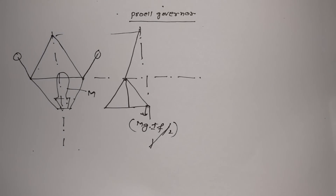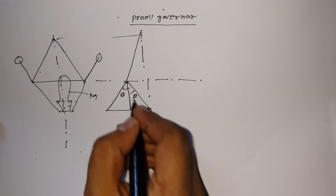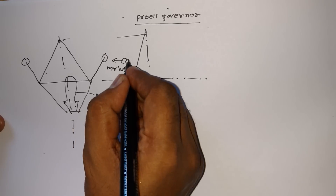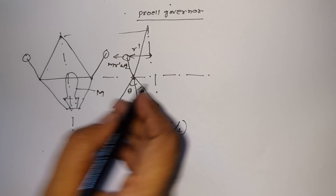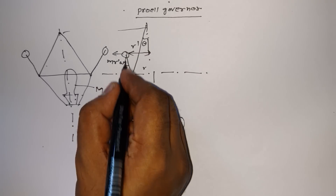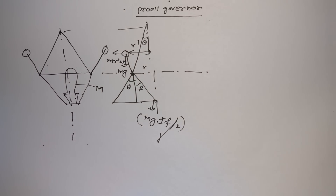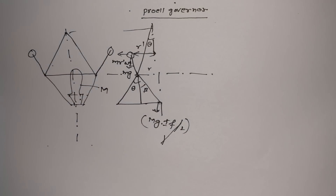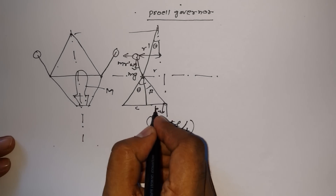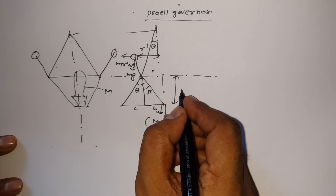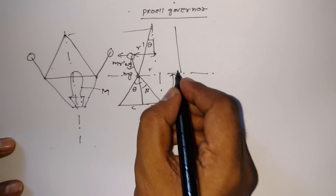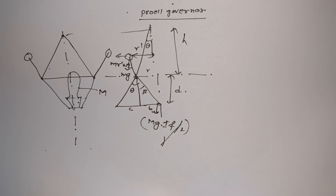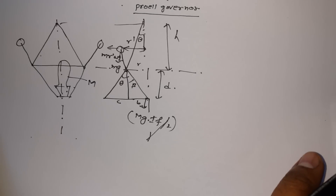Here we have theta and beta. Here is the mass of the ball, and mr-dash times omega-squared, because from here to here we have a distance r-dash. Here r, theta, and here we have mg. The centrifugal force is acting on this side, and the force due to gravity on the other side. Suppose this is A, B, C, and this is h — the height of the governor — and this is D.